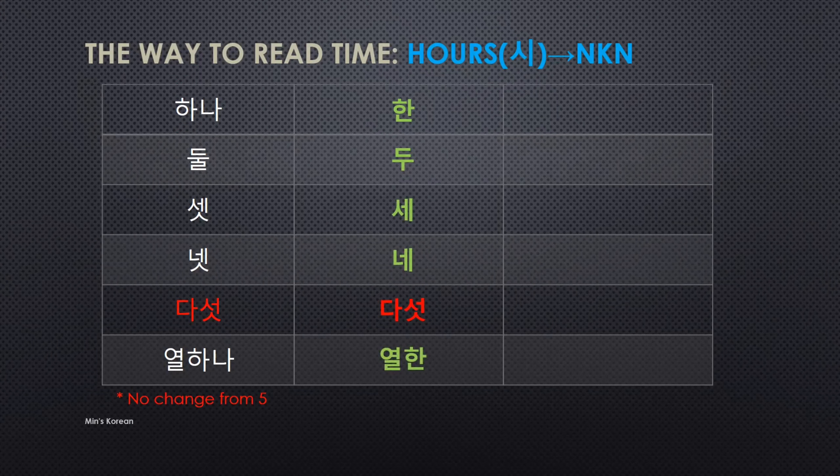So 1 o'clock is 한 시. 2 o'clock is 두 시. 3 o'clock is 세 시. 4 o'clock is 네 시. 5 o'clock is 다섯 시. 6 o'clock is 여섯 시. 7 o'clock is 일곱 시. And 11 o'clock is 열 한 시. Just be careful with 1, 2, 3, 4 — those four numbers change form. And one more: 20 is 스물, but when saying 20 o'clock with 시, you have to say 스무 시.